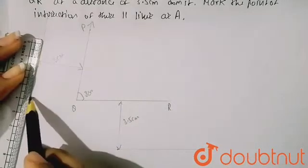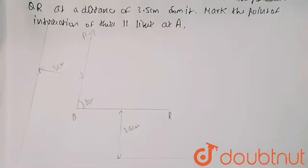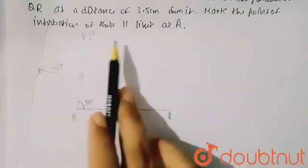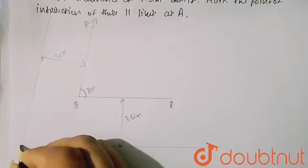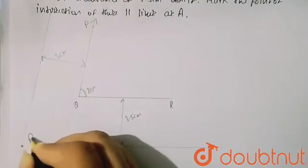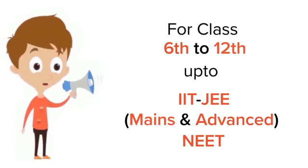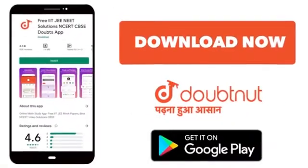You can see that these lines are intersecting at a point. In the question, it is written to mark the point of intersection of these lines as A. So here the point of intersection is A. This is my required construction. I hope you understand the question. Thank you. For class 6 to 12, IIT JEE, and NEET level — trusted by more than 5 crore students — download the DoubtNet app today.